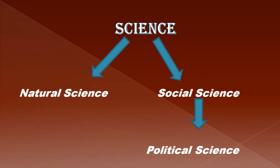Now, the question is why we call this discipline a science, or what type of science we see in this discipline. Human beings can be divided into two broad categories: natural science and social science. While natural science deals with the physical world, social science deals with human beings, their collective social life, social behavior, organizations, and activities.